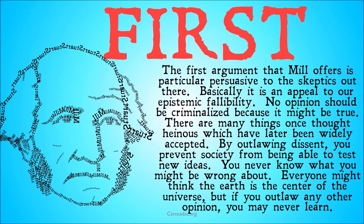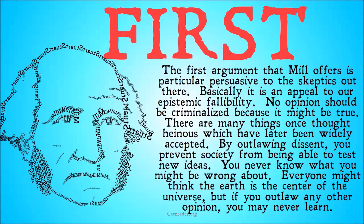The first argument that Mill offers is particularly persuasive to the skeptics out there. Basically, it's an appeal to our epistemic fallibility. No opinion should be criminalized because it might be true. Because we don't have perfect knowledge about everything, we can't know that any opinion, no matter how horrible we think it is, isn't simply false. There are many things once thought heinous which have later been widely accepted. Women wearing pants was thought immoral at one time, but many people have come around to that idea. By outlawing dissent, you prevent society from being able to test new ideas and further its goal of eventually getting to the truth.